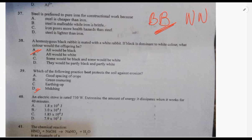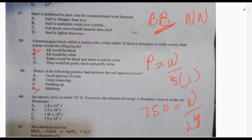40: an electric stove is rated 750 watts. Determine the amount of energy it dissipates when it works for 40 minutes. Power equals work done over time. We're given power as 750, and we have to find work done. Time is 40 minutes, which is 40 times 60, equals 2400 seconds. Multiply 750 by 2400, and our answer is 1.8 times 10^6 joules.